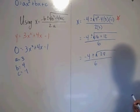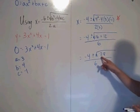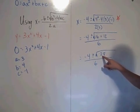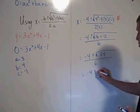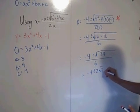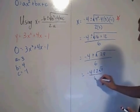And then if you can simplify this, do so. So 28 is 4 times 7. So this simplifies to negative 4 plus or minus 2 square roots of 7 all over 6.